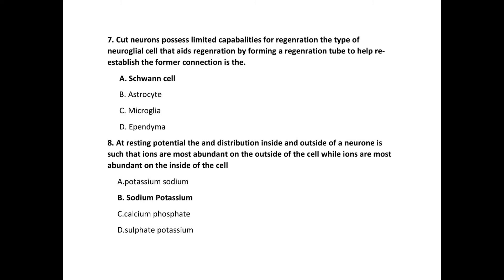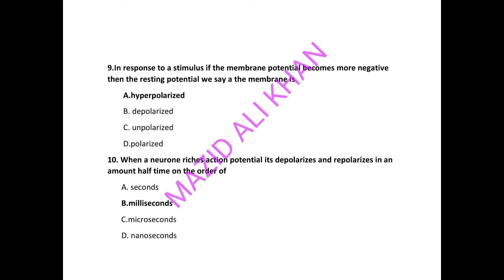Next question: at resting potential, the ion distribution on the outside of a neuron is such that sodium ions are most abundant on the outside of the cell, while potassium ions are most abundant on the inside. The correct choice is sodium and potassium. Next: in response to a stimulus, if the membrane potential becomes more negative than the resting potential, we can say the membrane is hyperpolarized — that is the correct choice.